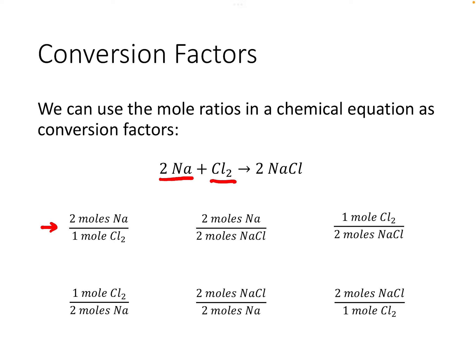We could use that ratio as a conversion factor in dimensional analysis. So let's say we're trying to solve for moles of sodium and we're trying to get rid of moles of chlorine. We can do that for any combination in this equation — maybe we're solving for sodium but trying to get rid of sodium chloride, which is a two-to-two ratio, or solving for chlorine and getting rid of sodium chloride, a one-to-two ratio. We can always flip that conversion factor if needed depending on what we're solving for.